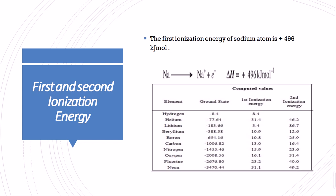If we take the sodium atom, the first ionization energy is 496 kJ per mole. This energy increases when we remove the second electron from the sodium atom. It is always the case that the first ionization energy is less than the second ionization energy required for the removal of the second electron.